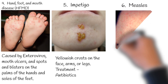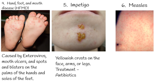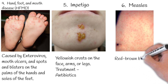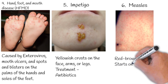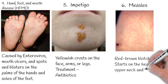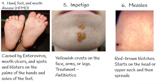Measles is a highly infectious illness that most commonly affects young children. The measles rash consists of red-brown blotches and usually starts on the head or upper neck, then spreads to the rest of the body. Vaccination is the prevention for measles, and measles usually resolves within 10 days.